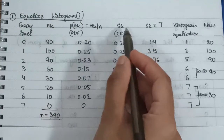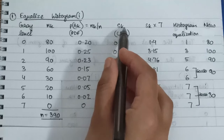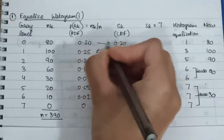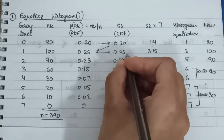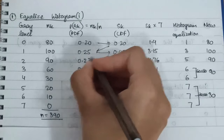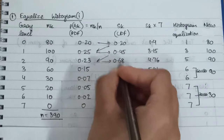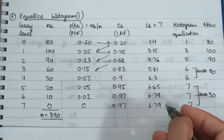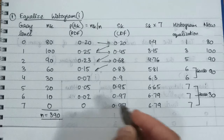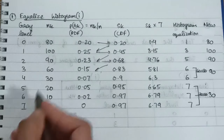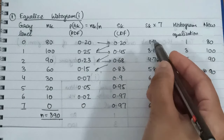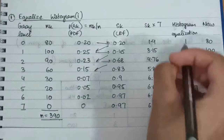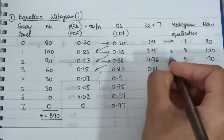Next we calculate the CDF, also known as sk. We directly take the first value, then sum successive values — giving 0.45, then 0.68, then 0.83, and so on. In the next column we multiply this by 7, because the gray level interval is from 0 to 7, giving us those values.